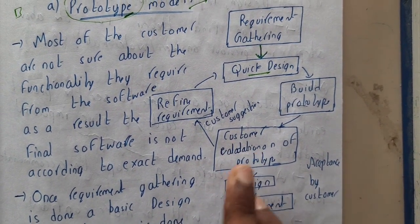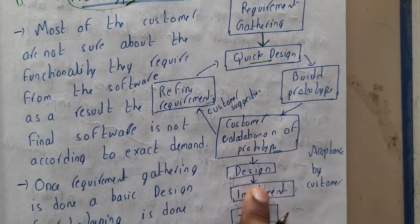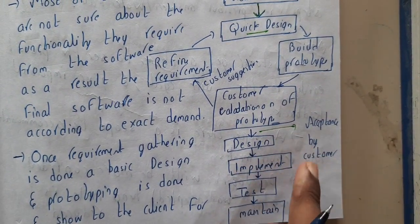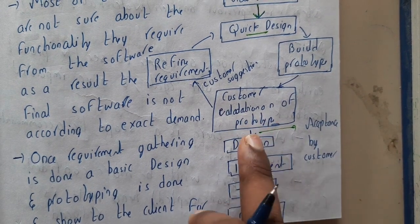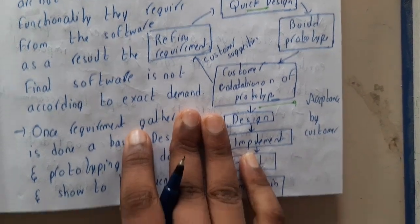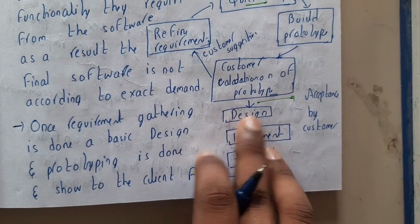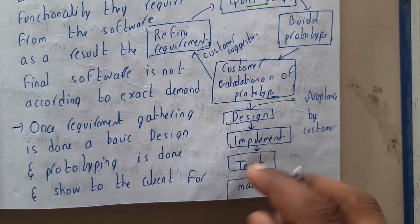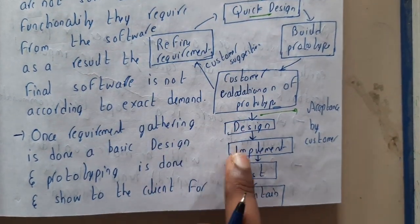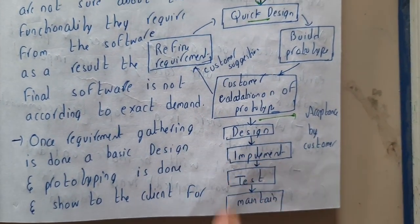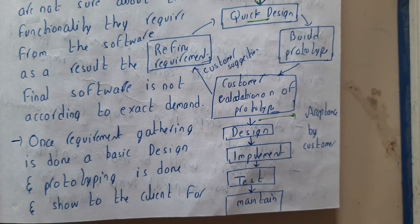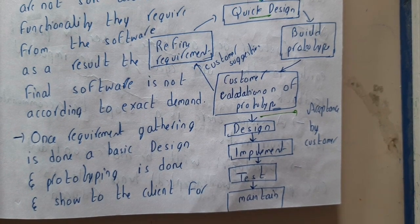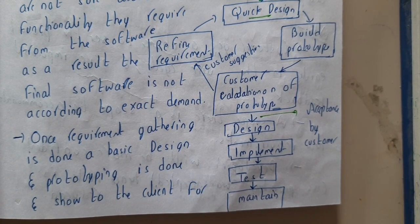After that you will be following the same process. Here the customer accepted that okay, the prototype is fine, I'm ready to work with you. Then you will be moving on to design, implement, test, and maintain. If you recall, we discussed about requirement gathering, designing, implementing, testing, maintenance from our past three to four lectures already. I'll be just giving you one or two statements. You can write on your own or you can check the previous lecture or previous notes to get the answers.